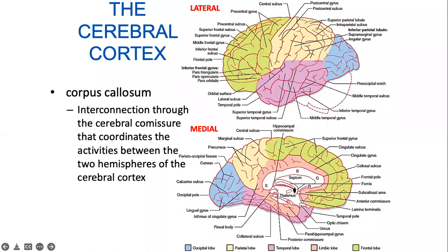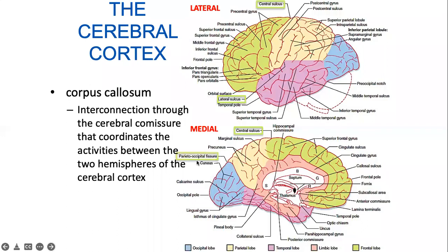The corpus callosum is a band of nerve tissue that connects your two hemispheres — your right and your left — and coordinates the activities between the two hemispheres of the cerebral cortex. If your corpus callosum is transected, you lose the coordination between the two cerebral hemispheres. The central sulcus divides your parietal cortex from your frontal cortex, the lateral sulcus separates your temporal lobe and frontal lobe, and the parieto-occipital fissure separates your parietal and occipital lobes.